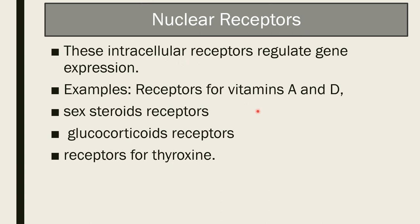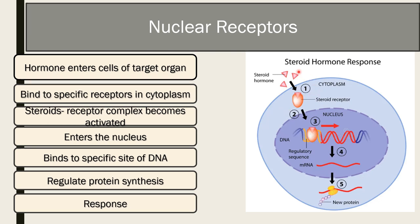The fourth type is the nuclear receptor — intracellular receptors that regulate gene expression. Examples include receptors for vitamin A, vitamin D, sex steroids, glucocorticoids, and thyroid hormone. These receptors take time to act, but the action is prolonged once developed. The hormone enters the target cell, binds with a specific receptor in the cytoplasm forming a steroid-receptor complex, which becomes activated, enters the nucleus, binds to a specific site on the DNA, and regulates protein synthesis to produce a response.